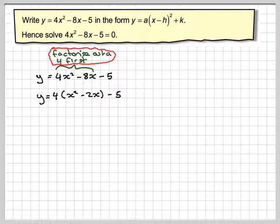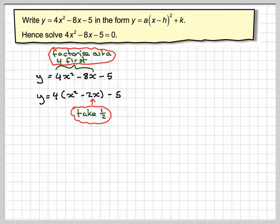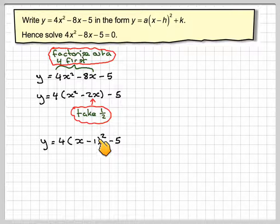Right, now we go back to the idea of completing the square by taking half of this number here. So half of minus 2 is minus 1. And now write down y equals 4 times (x minus 1) squared, write down the minus 5.